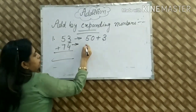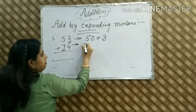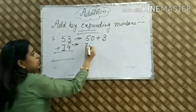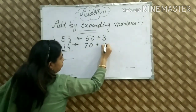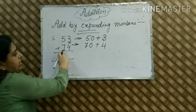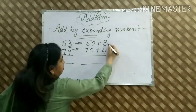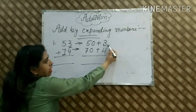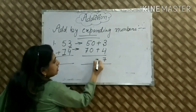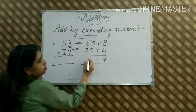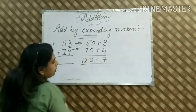Next we have 74. In 74, we write 7. After 7, how many digits? One digit, so it will add one zero. And next we have 4. Now we will add: 3 plus 4 equals 7. Then plus sign, we add 0 and 0, and 50 plus 70 is 120.